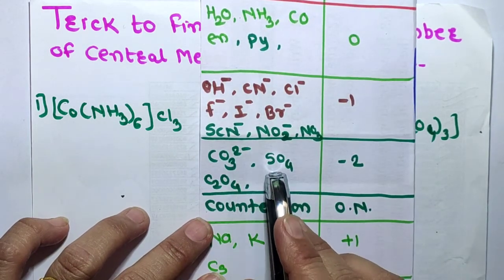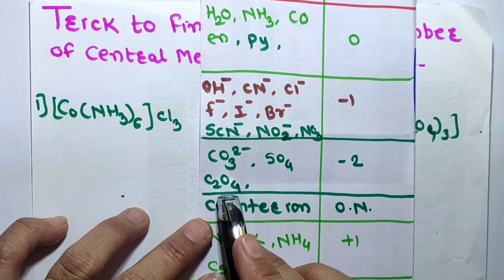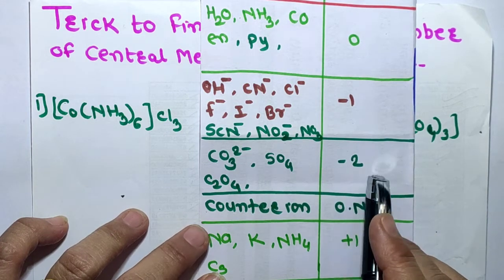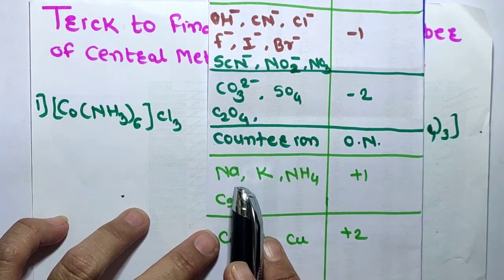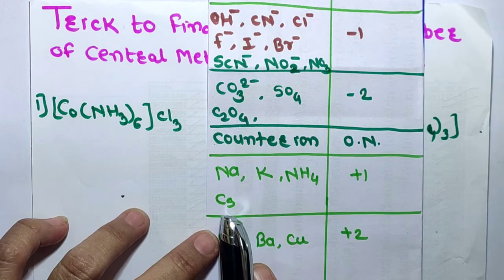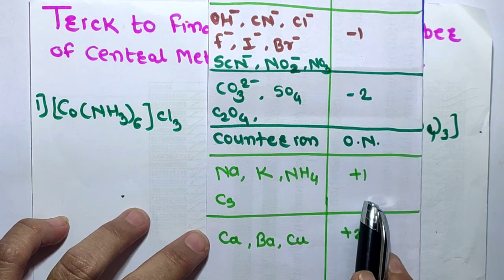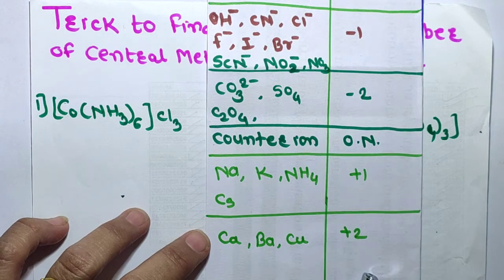CO3²⁻, sulfate, and oxalate ions have oxidation number minus two. The counter ions sodium, potassium, NH4⁺, and cesium have oxidation number plus one. Calcium, barium, and copper have oxidation number plus two.